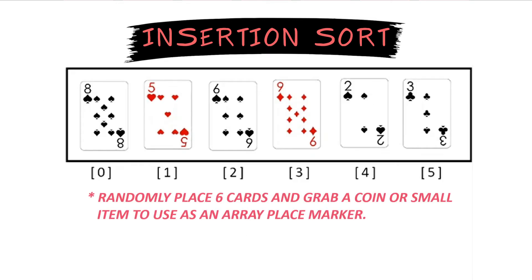First, randomly lay out a few cards on the table and grab a coin or a small item to mark where we're at in the array.